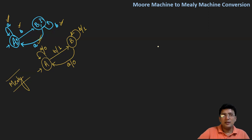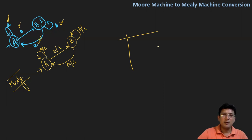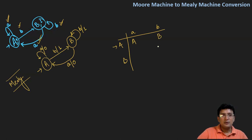So this is the Mealy machine. For the Mealy machine, not only the diagram is important, but also the transition table, which defines lambda and delta. The states here are A and B, with A as the start state. The input alphabets are 'a' and 'b', and the output alphabets are zero and one. With 'a', you remain at A; with 'b', you go to B. On state B with 'a', you go to A; and with 'b', you remain at state B.